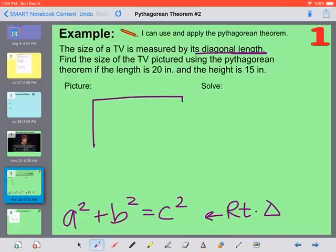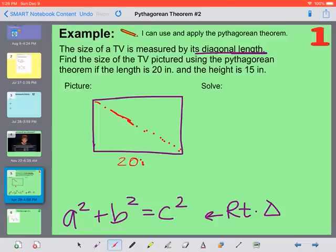So TVs are a rectangle, so we know those are right angles. So we want to figure out what is the diagonal length from one corner to the other. The length of the TV is 20 inches and the height is 15 inches.